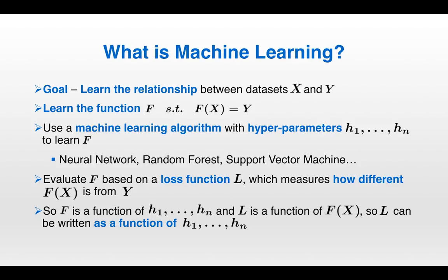What's a hyperparameter? An example of a hyperparameter for a neural network is the number of layers. These are all just inputs to the machine learning algorithm that determine how the algorithm is going to determine what the function f will be in order to predict y.